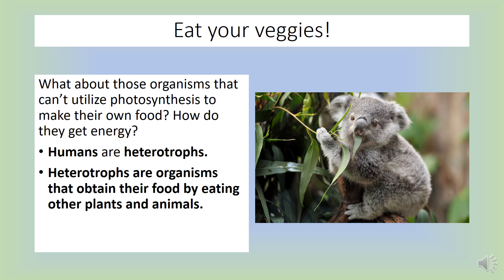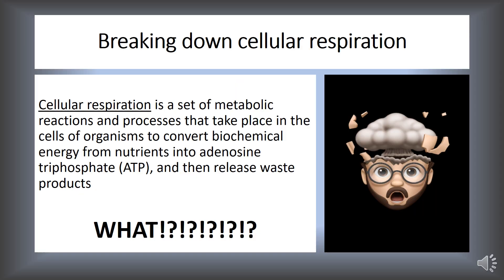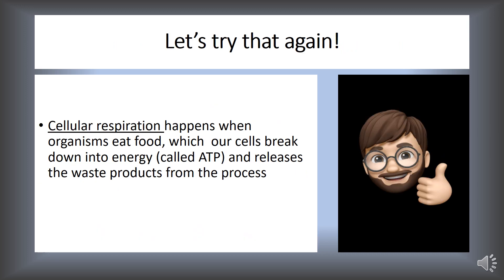Humans and other animals are classified as heterotrophs. We obtain our food and energy by eating other plants and animals. We have a different process for energy production called cellular respiration, which is when organisms eat food, and cells break down that food into energy called ATP, then release the waste products from the process.